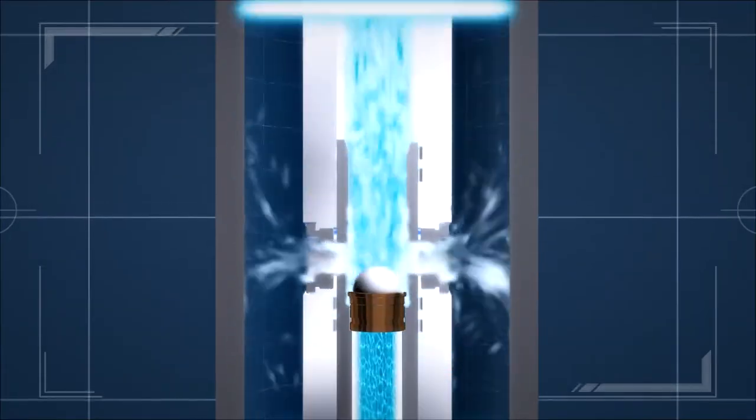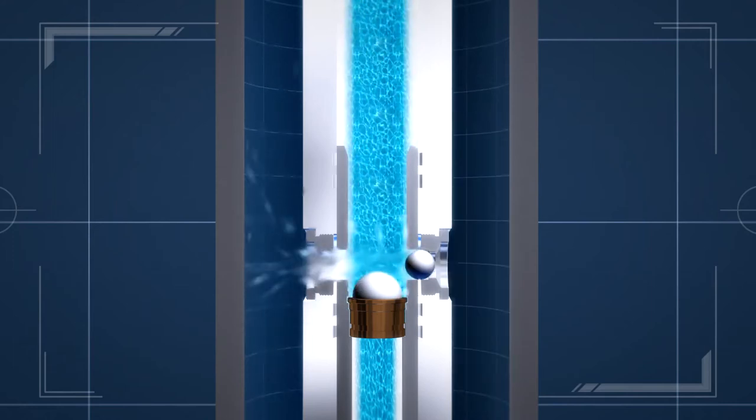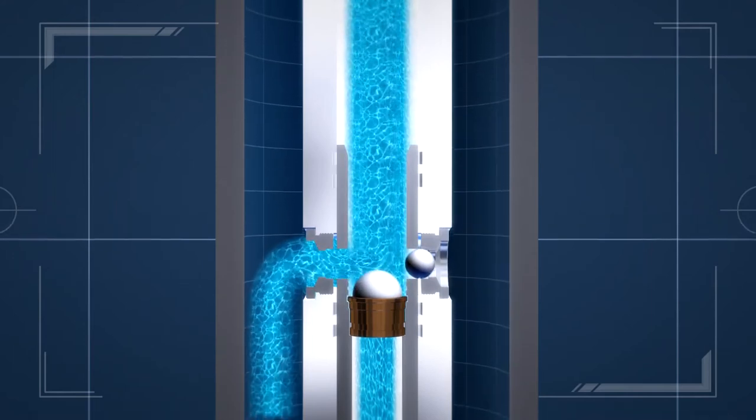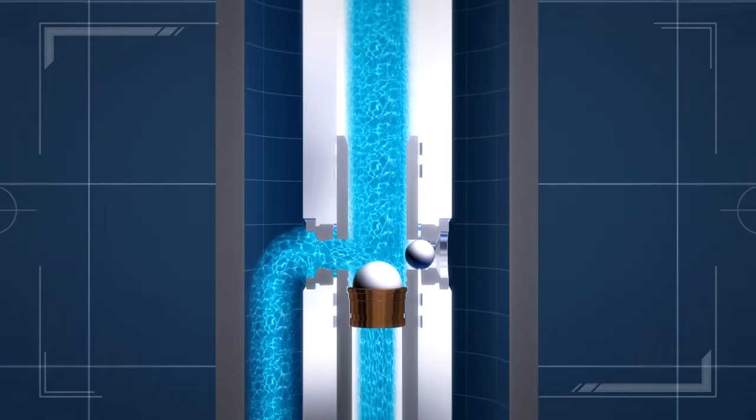To drain the drill string, a smaller locking ball is pumped down. When the locking ball lands in the port insert, the PBL tool will remain open when pumps are turned off. The drill string will now drain while pulling out of the hole.